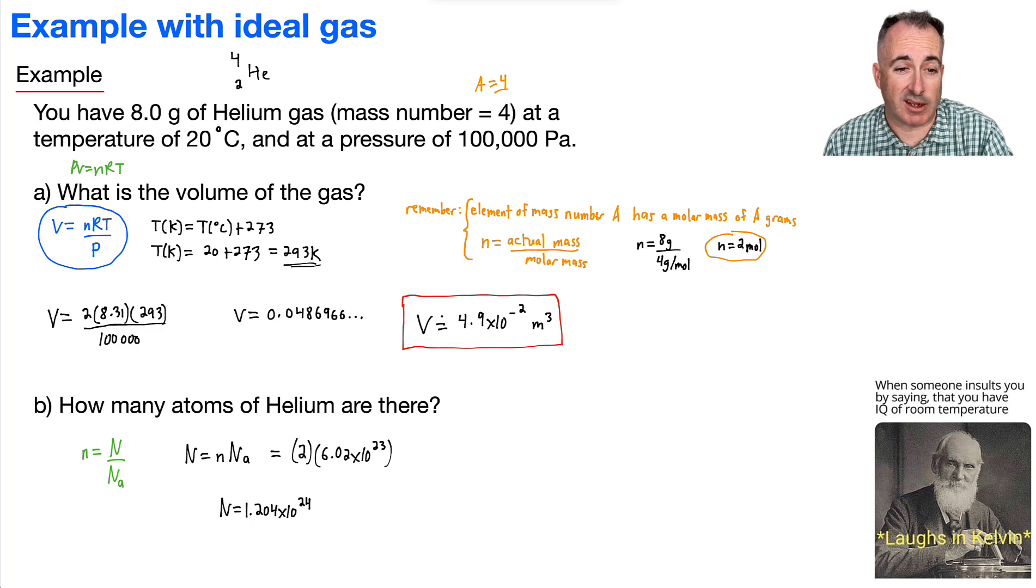Now, if I want to do this answer to the proper significant figures, again I can only use 2, so I'll say that means the total number of atoms will be 1.2 times 10 to the 24. And let's make sure we use the right units, which is atoms.